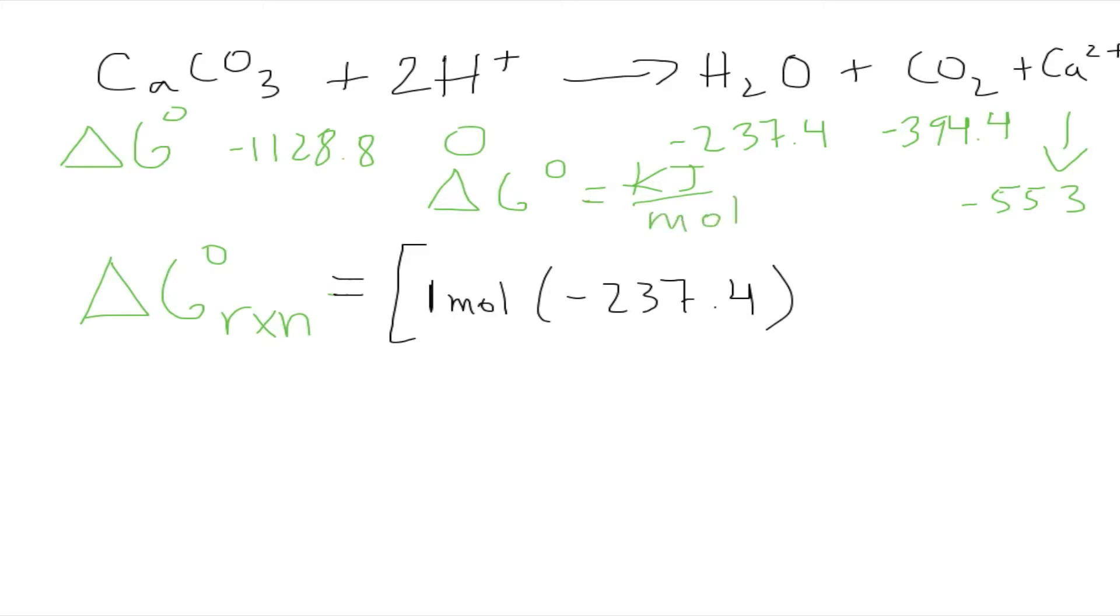So we will get a value of Delta G for the reaction in kilojoules because the moles cancel each other. Now we go to CO2, so that'll be one mole times negative 394.4, plus calcium, we have one mole times negative 553.